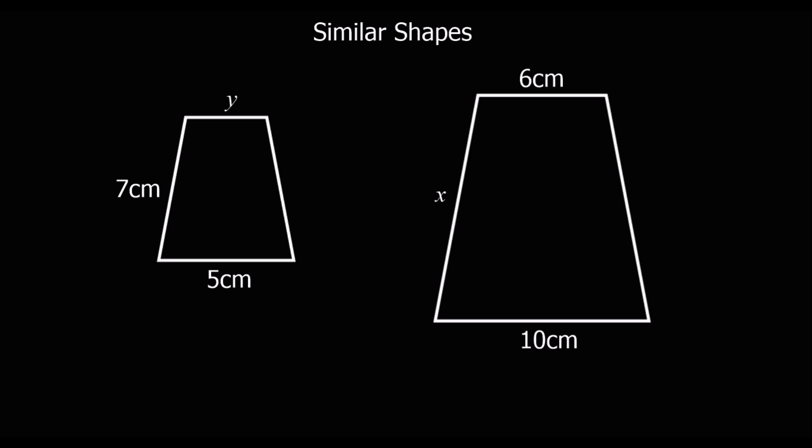So if we look at these two shapes here, we can see that we know this bottom length for both of them. This one's 5 and this one's 10. So whenever we want to find the scale factor, just take the bigger one, which is 10. So scale factor equals the bigger one divided by the smaller one. So 10 divided by 5 is 2.